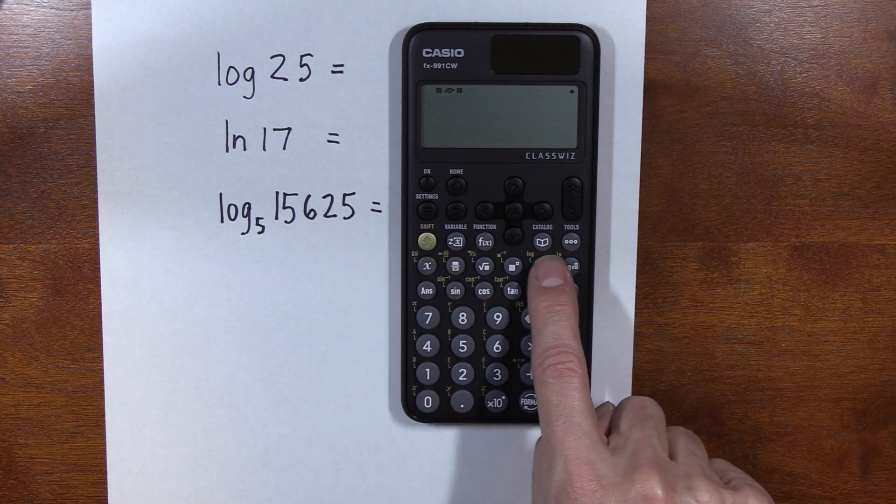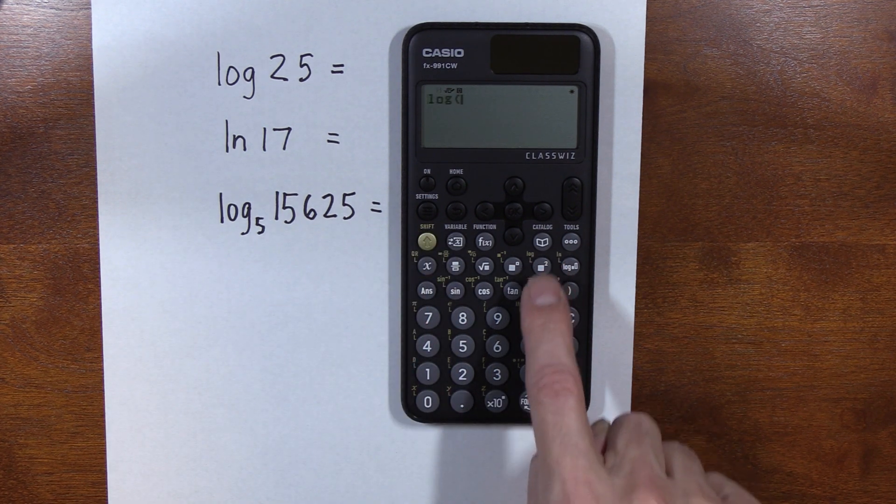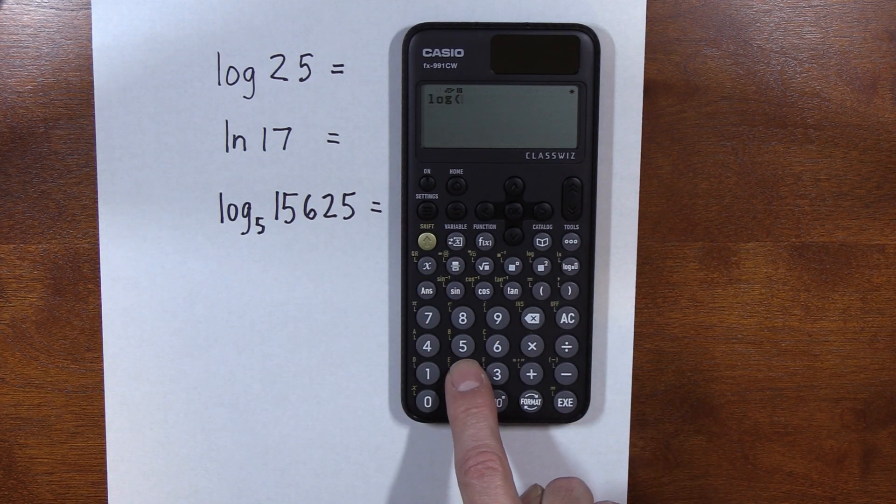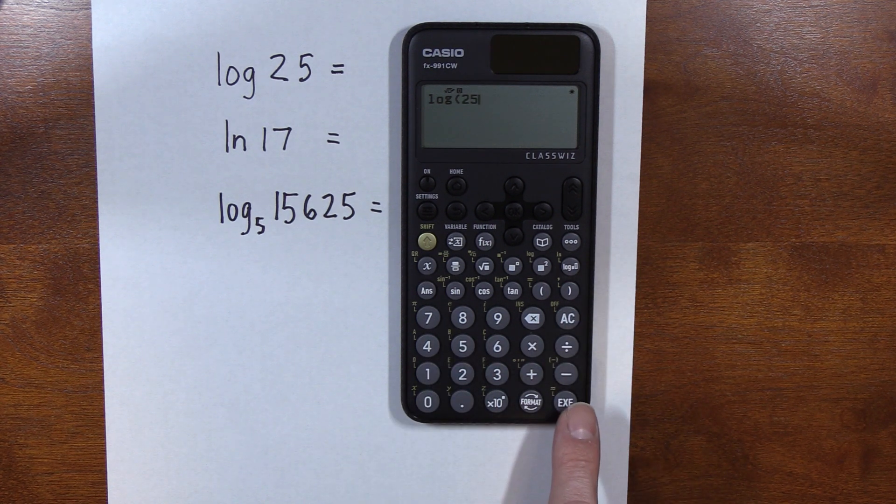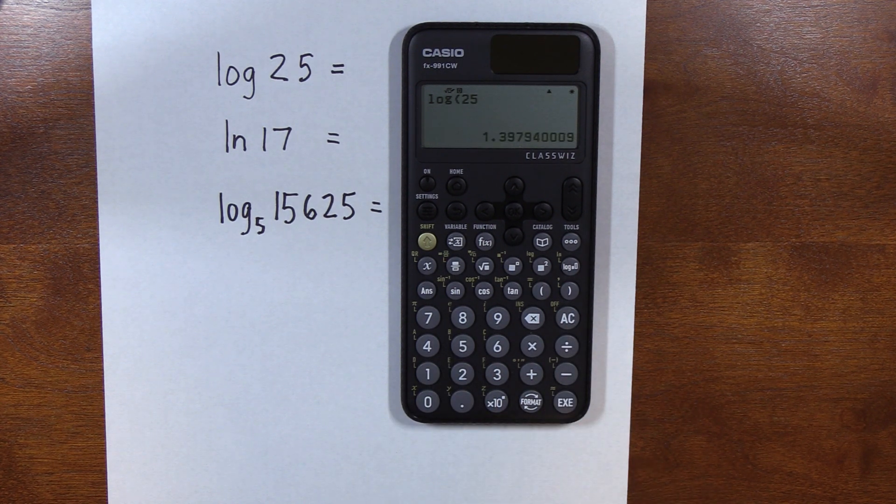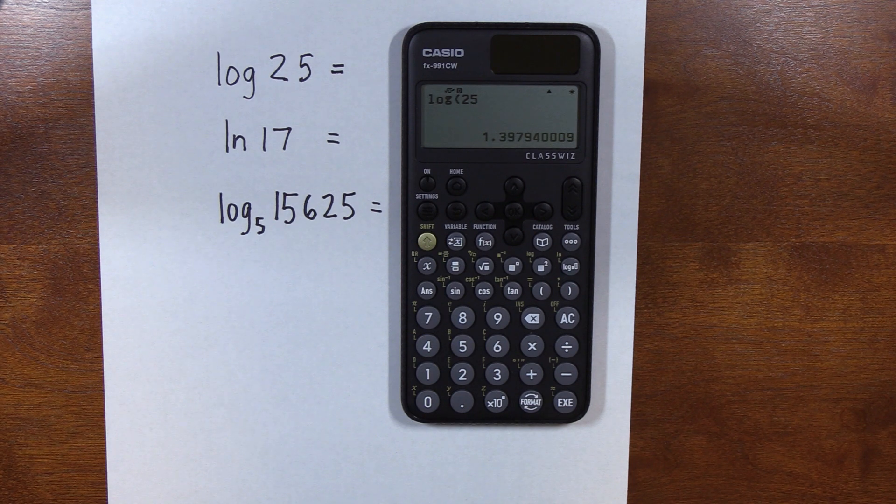It's shift, and then here the square button, log, 25. I don't need to put the other parentheses, I can just hit execute. There you go, 1.39.